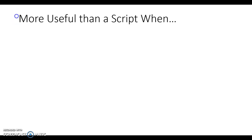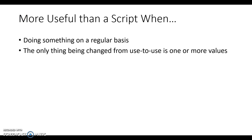In this video we're briefly going to talk about using functions in Octave. Functions are similar to a script except they're more useful when you're doing something on a regular basis, or the only thing being changed from use to use is one or more values. A script is valuable because it shows you exactly the sequence of logical steps in computing an output, but if all you're doing from one run to the next is changing numerical values, then maybe you don't want to see the script each and every time. For example, consider a least common multiple — I don't want to see what the code is doing each time, I just want it to compute and output the result.